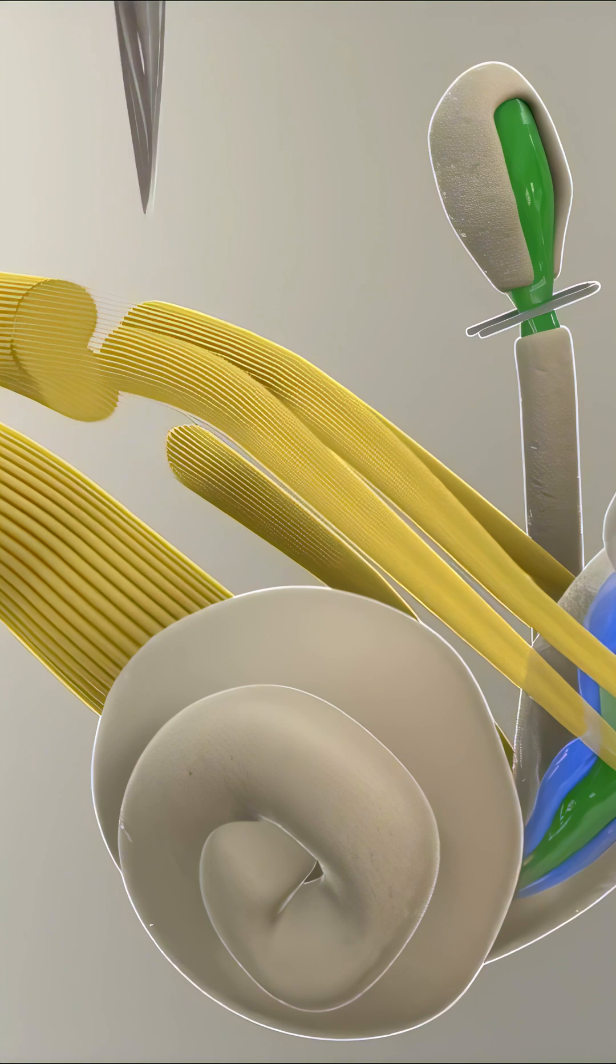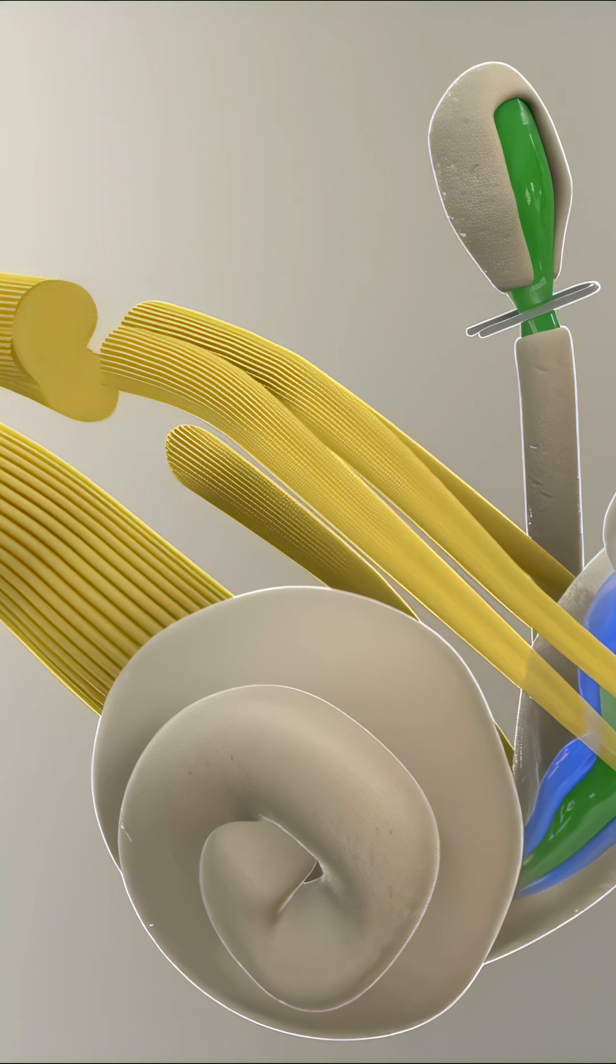In severe cases where vertigo can't be controlled, the nerve responsible for balance in the inner ear may be surgically severed.